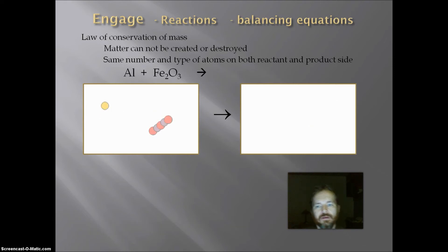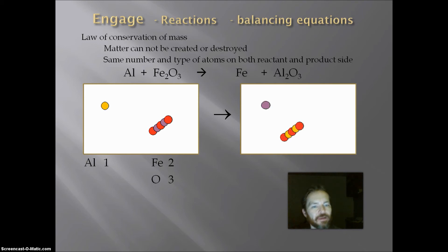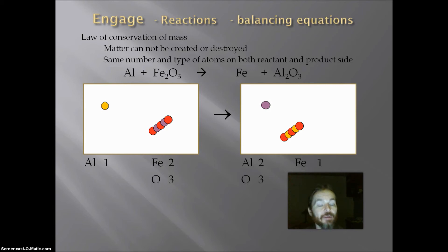Next reaction: we have a single displacement. We have aluminum and iron three oxide. If you look at the aluminum and iron three oxide, we have one aluminum, two irons, and three oxygens altogether on the reactant side. As a single displacement reaction, the element, which is a metal, will replace the metal in the compound. So aluminum and iron three oxide will give us iron and aluminum oxide. If I look at the iron and aluminum oxide, I have two aluminums, three oxygens, and one iron all together total.